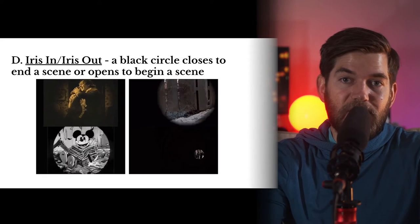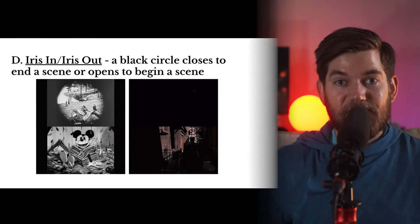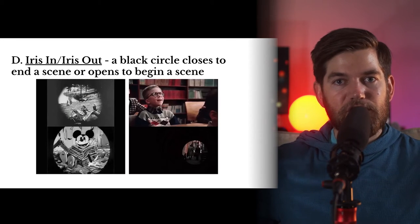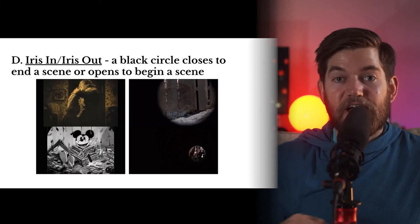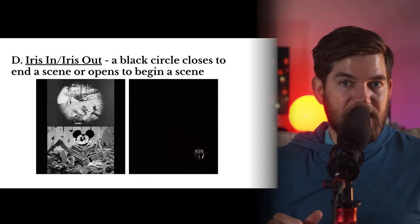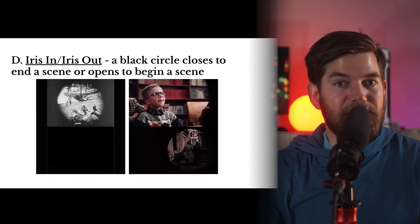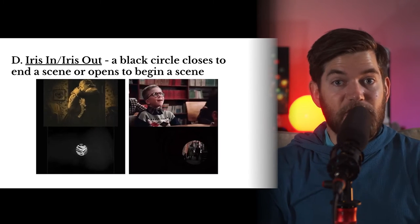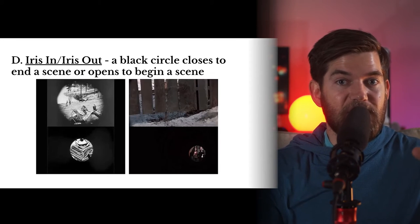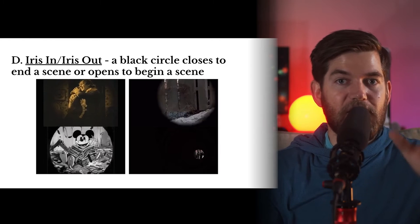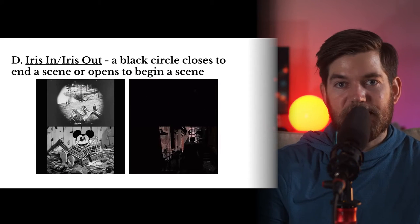The oldest type of transition is the iris in or iris out. In this transition, a black circle opens to reveal a shot or closes to end a shot, usually opening at the beginning of a scene and closing at the end of a scene or the end of the film. Here you can see some old and newer examples using the iris in or iris out. Some creative editors have used it to focus the circle around part of the subject, not always in the center of the frame.